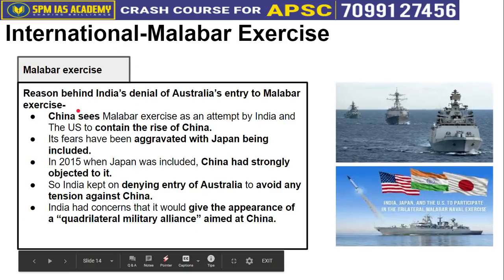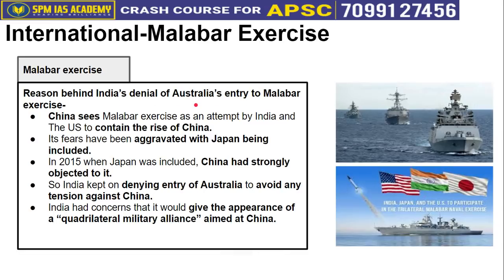India repeatedly rejected Australia's request to join the Malabar Exercise. The main reason was that India did not want too many countries engaging in Malabar because China sees this exercise as a threat — specifically as an attempt by India and the US to contain China's rise, especially in the Indo-Pacific region. When Japan joined in 2015, China strongly opposed and objected. India feared that including Australia would provoke China further and potentially escalate military conflict in border areas.